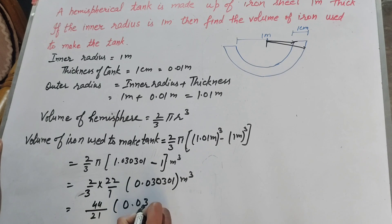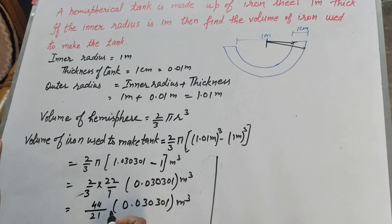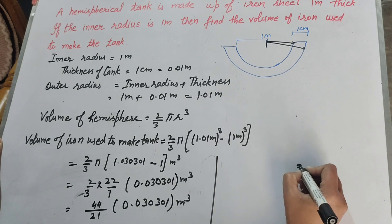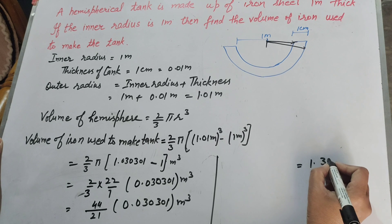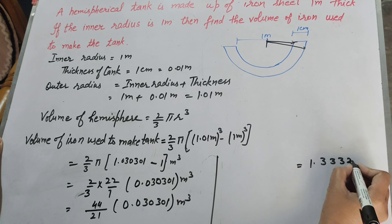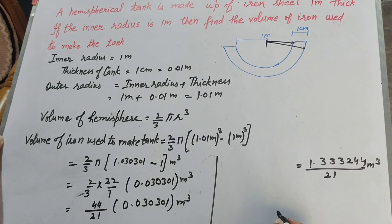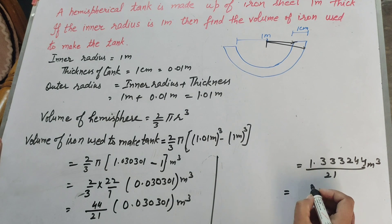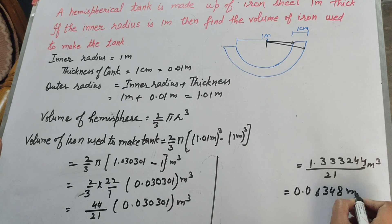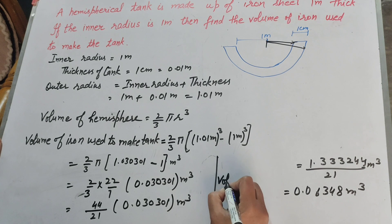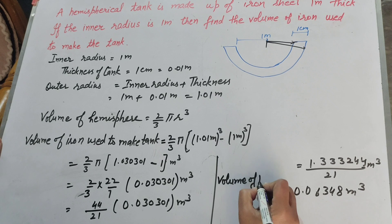Multiplying 44 by 0.030301 gives 1.333244. Dividing 1.333244 by 21, we get 0.06348 meter³. So this is the volume of iron used to make the tank.